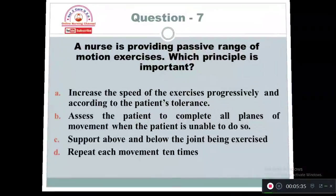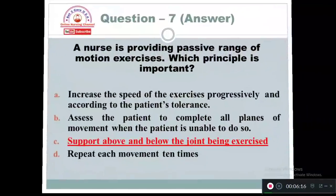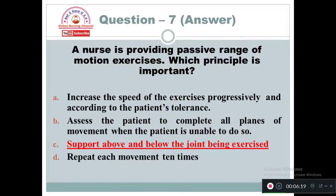Question 7: A nurse is providing passive range of motion exercise. Which principle is important? Option A: Increase the speed of the exercise progressively according to the patient's tolerance. Option B: Assist the patient to complete all planes of movement when the patient is unable to do so. Option C: Support above and below the joints being exercised. Option D: Repeat each movement 10 times. The right answer is Option C — support above and below the joint while being exercised.